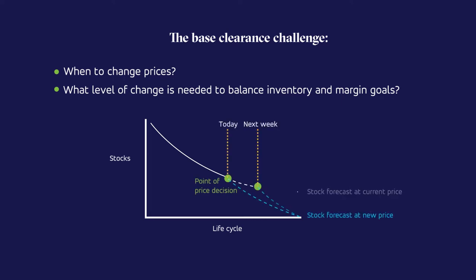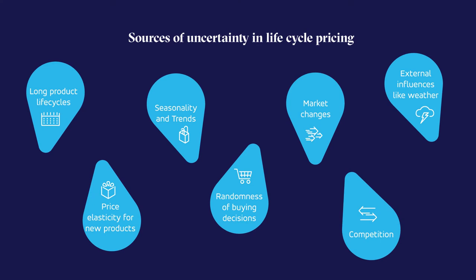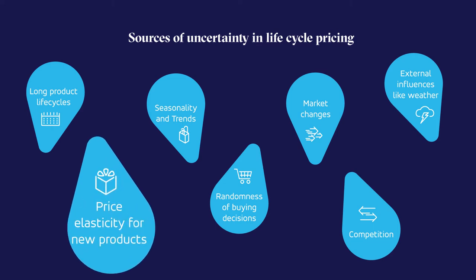The first blue dotted line shows the probable effect if the price is reduced by 30% on the current day. The second dotted line is the corresponding effect of a 40% reduction next week. The key question here is which reduction works better to achieve business goals. To arrive at the correct price decision, you need to analyze all the uncertainties surrounding the forecast. For instance, the product could be very early in its life cycle, and due to only a few sales, the forecast is quite uncertain.